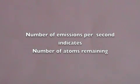For example, alpha or beta particle emissions. When the number of emissions halves, that tells you that the number of atoms has halved.